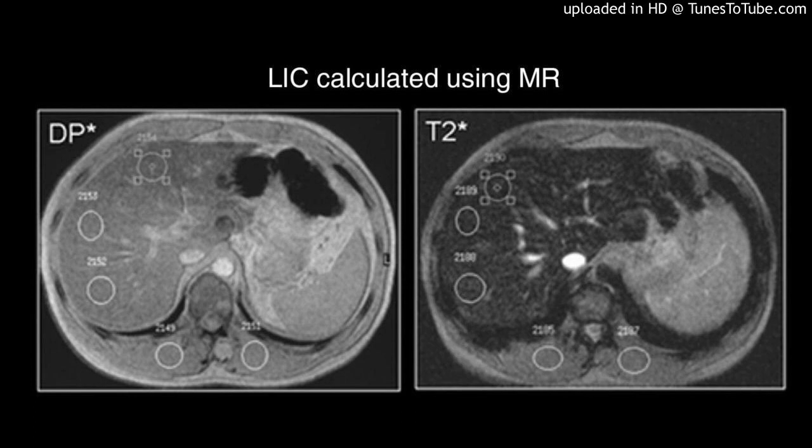Results: Ferritin levels showed a strong inverse correlation with hepatic T2 MRI values (R = -0.631, p = 0.001), but a poor correlation with cardiac T2 MRI values (R = -0.297, p = 0.044). The correlation between cardiac T2 MRI values and hepatic T2 MRI values was poor and insignificant (R = 0.287, p = 0.058).